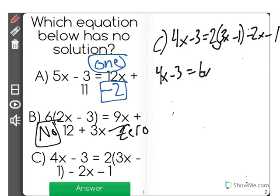2 times 3x is 6x. 2 times negative 1 is minus 2. And then we still have the end of the equation. We're going to combine like terms here, and we'll see 4x minus 3 equals 4x minus 3.